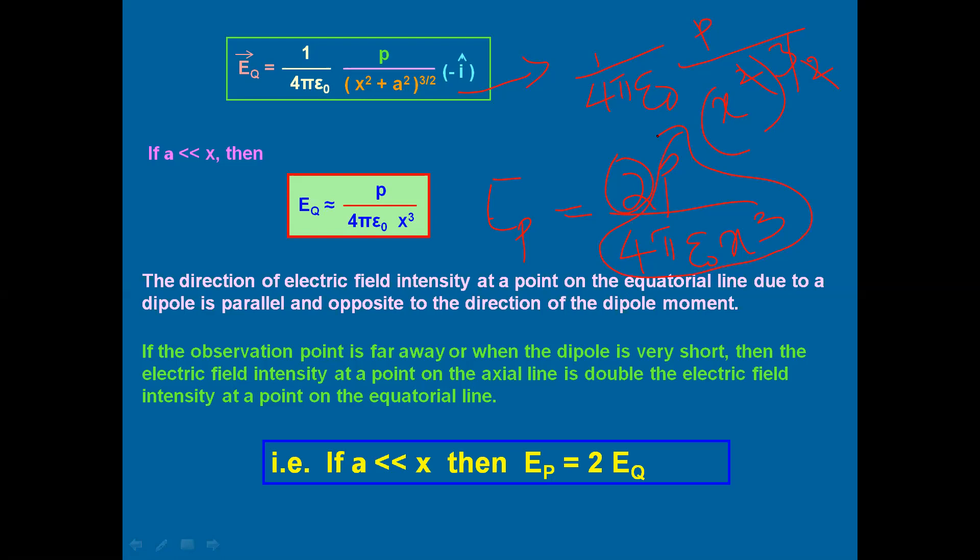So today we derived the equation of electric field due to an electric dipole at the equatorial point. The magnitude is (1/4πε₀) · p / (x² + a²)^(3/2) and the direction is opposite to the dipole moment. Hope it is very clear. Please do study this topic — it is one of the very important and repeatedly asked board exam questions. Thank you for watching. Have a great day ahead, and stay connected to get more physics topics understood in an easier way.